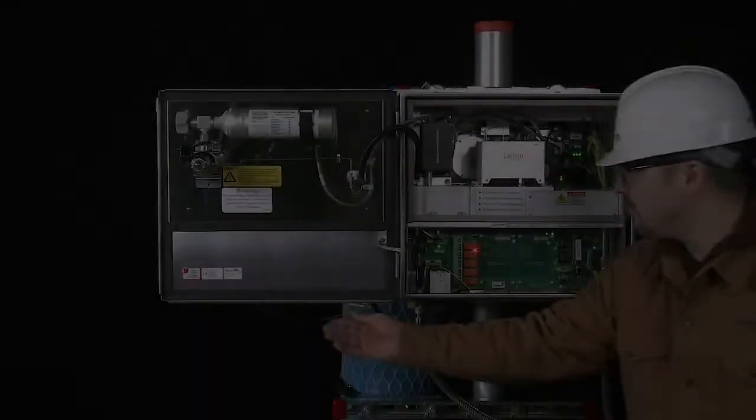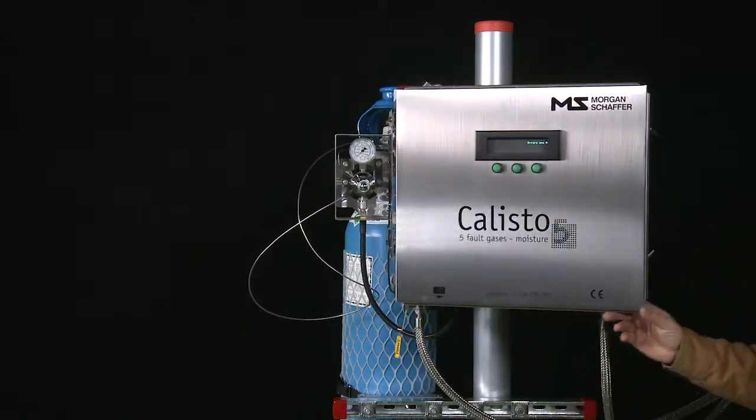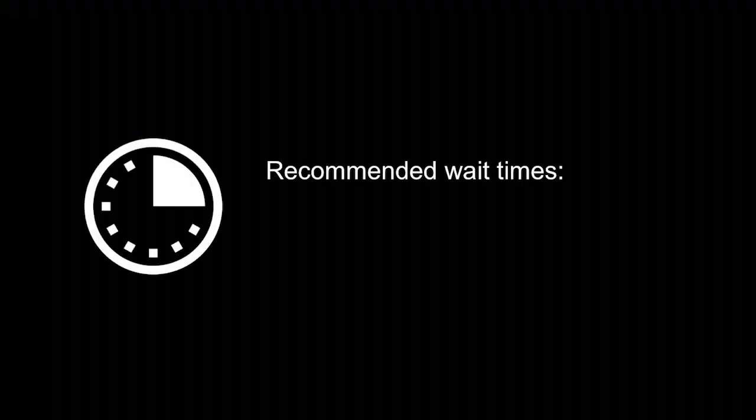Some care should be taken in interpreting the pressure drop errors as leaks, since they could be caused by a decrease in temperature of the calibration gas cylinder if the door is open. To be sure, close the door and wait to see if the error condition clears. Recommended wait times are 2 hour wait for the 1 hour drop error, 13 hour wait for the 12 hour drop error.